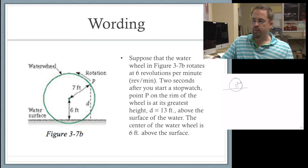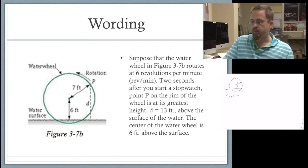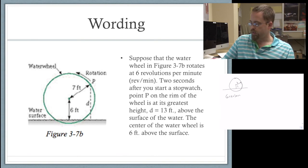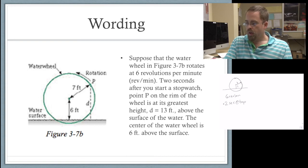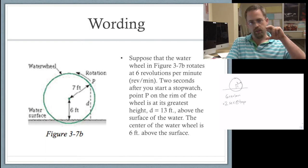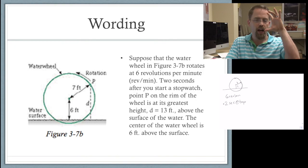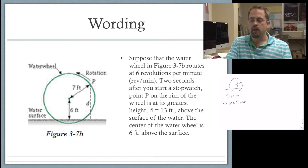Suppose the water wheel in figure 3-7b rotates at 6 revolutions per minute. Two seconds after you start the stopwatch, point P on the rim of the wheel is at its greatest height. So at plus 2 seconds, we are at the top. That greatest height is 13 feet above the surface of the water. The center of the water wheel is 6 feet above the surface. So if the center is 6 feet above the surface and the radius is 7 feet, then at the top of the water wheel you're at 13 feet up.